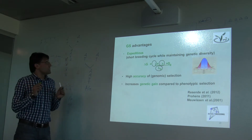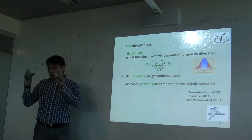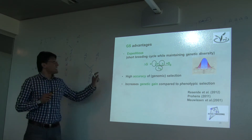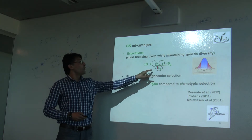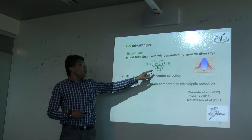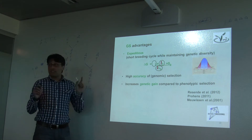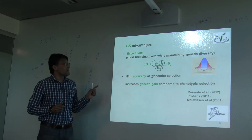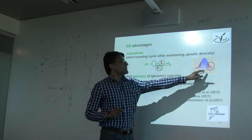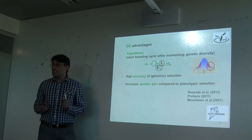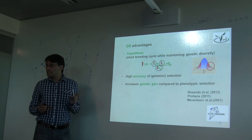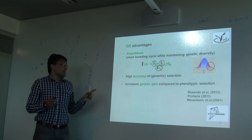Coming to the advantages of genomic selection over classical methods: the first advantage is that it is a quick system because it has a low breeding cycle — this is what they call the breeder's equation. If you have a low breeding cycle and high accuracy of selection, and you select the top individuals, it means you increase the intensity of selection. All of this means you increase the genetic gain or genetic improvement. So it has many advantages.